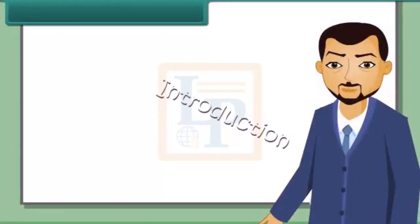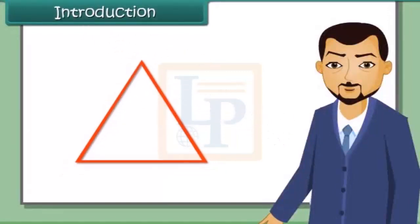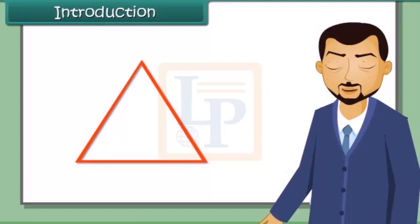We have seen that a triangle has six parts: three sides and three angles. But to construct a triangle, you need to know only three parts. So we can construct a triangle using the SAS, ASA, SSS and RHS axioms. Now a question arises whether four measurements would be sufficient to draw a unique four-sided closed figure, namely a quadrilateral. As a quadrilateral has eight parts, we need to know at least five parts to draw a quadrilateral.